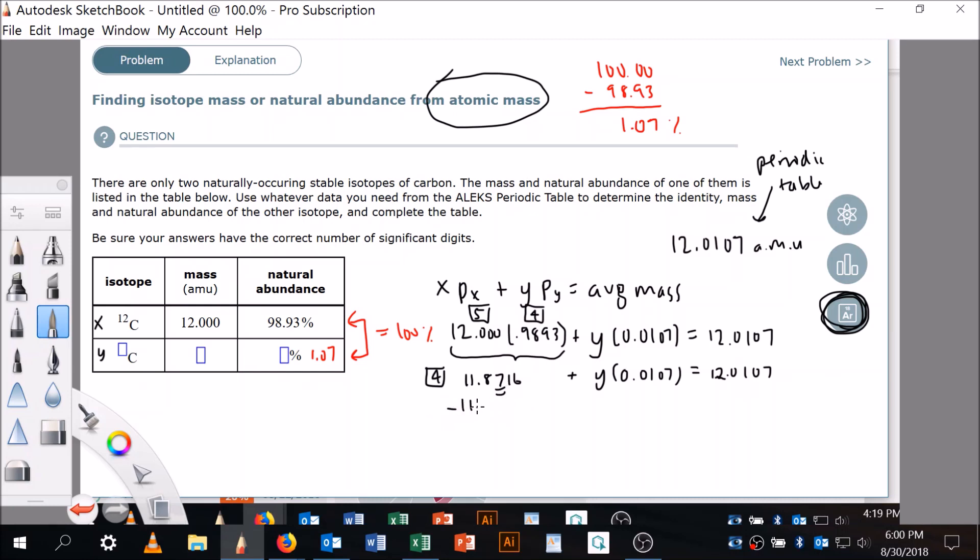All right, so plus Y times 0.0107 is equal to 12.0107. What a coincidence! Look at that. I think it's a coincidence. You see that 0107. All right, now that I've got that, I'm going to subtract 11.8716 from both sides. I'm going to get Y times 0.0107 is equal to...